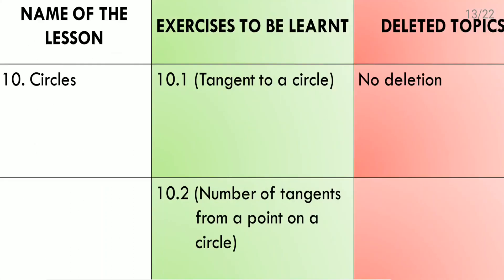Lesson 10: Circles. Exercise 10.1 is about tangents to a circle — specifically one tangent to a circle. Exercise 10.2 covers the number of tangents from a point on a circle. Both exercises we need to do, and no deletion is there in this lesson.